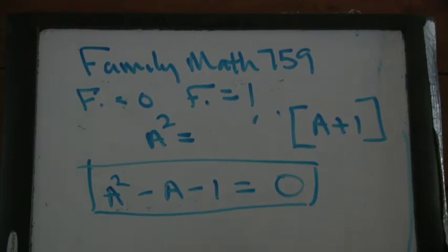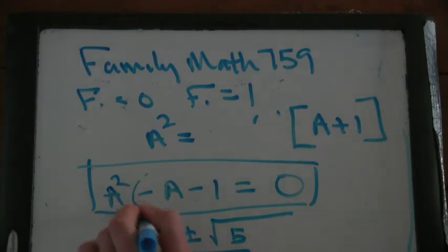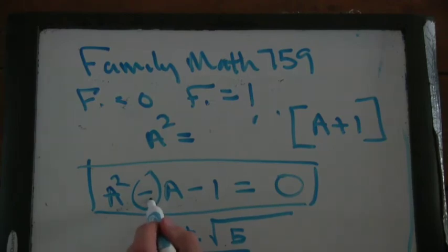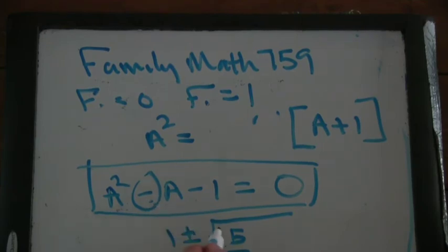So it says it's 1 plus or minus the square root of 1 square root of 5 over 2. So the quadratic formula says you take negative this coefficient plus or minus the square root of this coefficient squared. So this is 1.